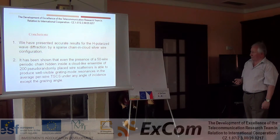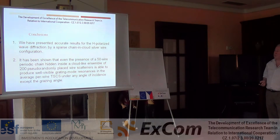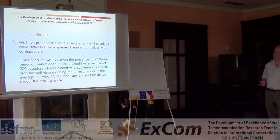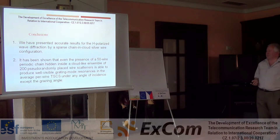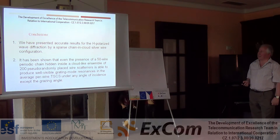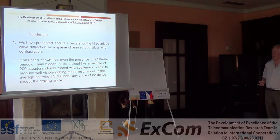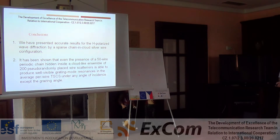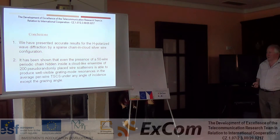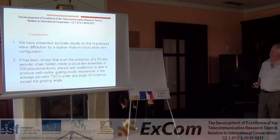To conclude, we have presented accurate results for TM H-polarized wave diffraction by a chain of silver nanowires ordered in a line, embedded in a cloud of non-ordered and much more sparse nanowires of exactly the same material. Even the presence of as few as 50 wires of the periodic chain inside the cloud is able to produce a well-distinguishable signature — which we call the signature of the presence of ordered nanowires — clearly seen as a function of angle of incidence across the full range.